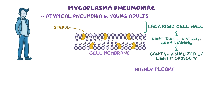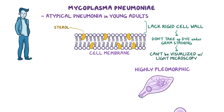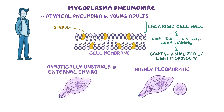Additionally, they're highly pleomorphic bacteria, meaning that they have no fixed shape and size, and they're also osmotically unstable in the external environment. So to survive, mycoplasmas invade host cells and live intracellularly.